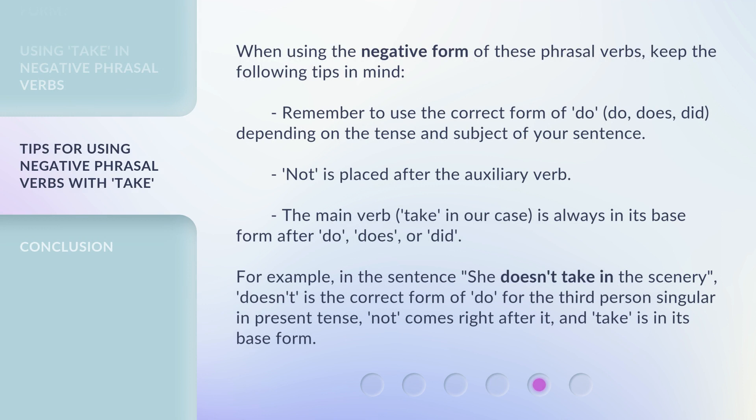When using the negative form of these phrasal verbs, keep the following tips in mind. Remember, 'not' is placed after the auxiliary verb. The main verb 'take' is always in its base form after 'do,' 'does,' or 'did.' For example, in the sentence 'She doesn't take in the scenery,' 'doesn't' is the correct form of 'do' for the third person singular and present tense. 'Not' comes right after it, and 'take' is in its base form.